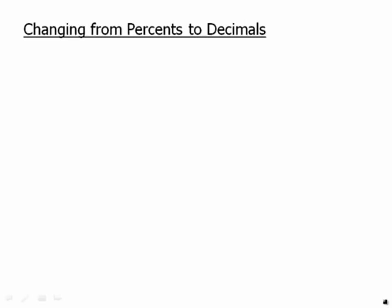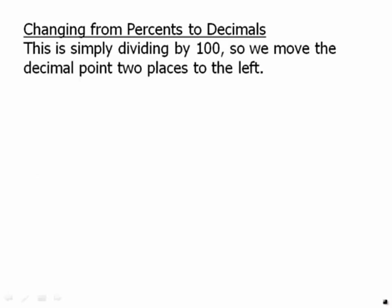Talking about that: changing from percents to decimals. This is simply dividing by one hundred, so we move the decimal point two places to the left. Here we have some percents we want to change to decimals. We move two places to the left; in some cases we have to insert place-holding zeros.